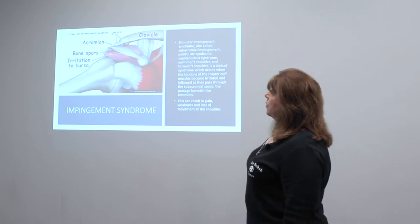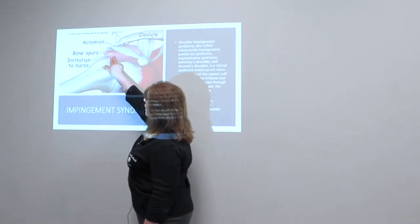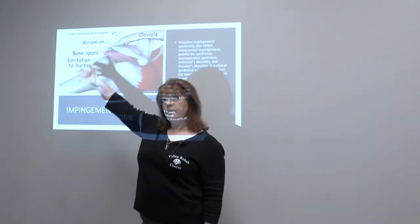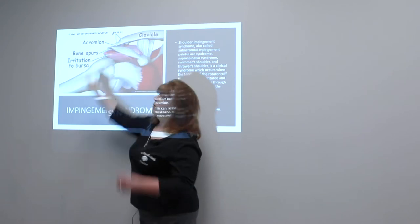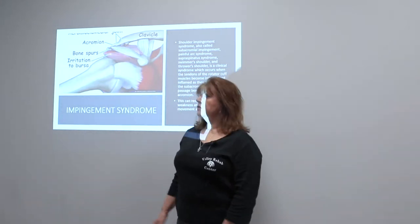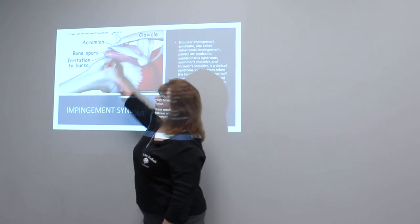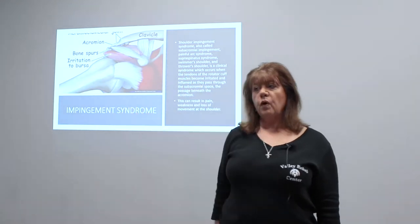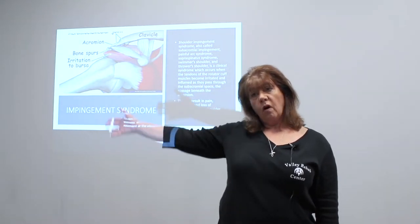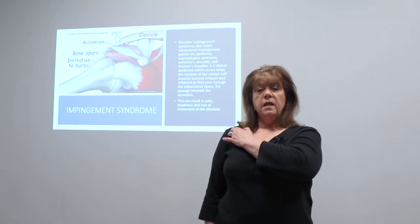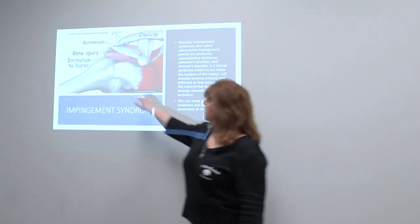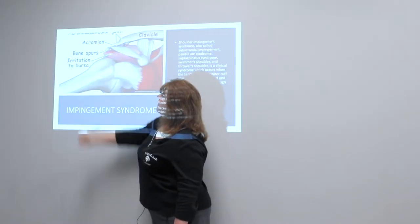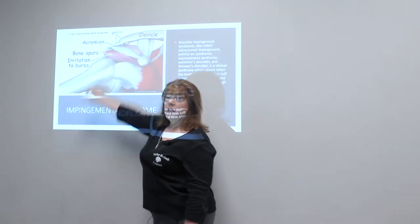Impingement syndrome occurs when you get pressure on the rotator cuff — when the humerus, or your arm bone, hits the clavicle or the AC joint. The rotator cuff muscles lie between these two bones, and when you raise your arm, if there's poor alignment, you're going to get a pinching or painful sensation. Sometimes with people who do repetitive overhead work — like carpenters, electricians, or roofers — they develop bone spurs right at this AC joint, or acromioclavicular joint, which puts pressure on the rotator cuff muscle and causes pain.